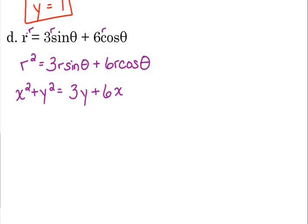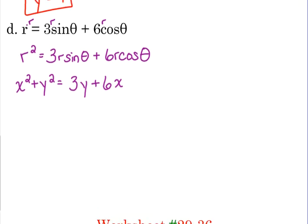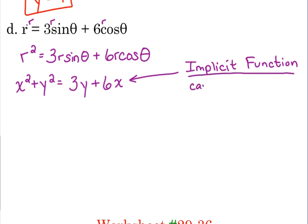But it doesn't really do us a whole lot of good. Now this has nothing to do with polar and rectangular, but I did want to throw this out. This is called an implicit function. It's called an implicit function. What an implicit function means is you can't completely isolate the Y.